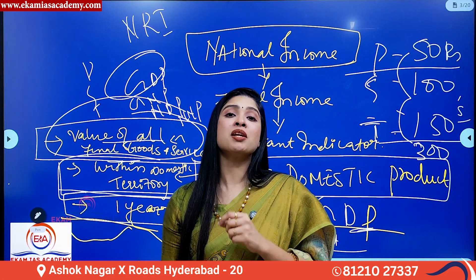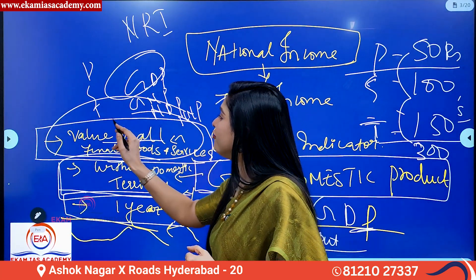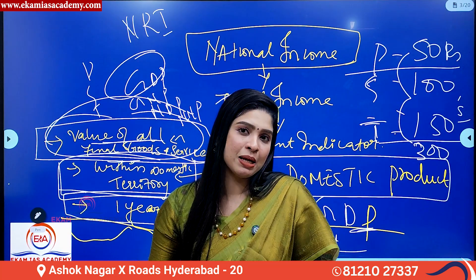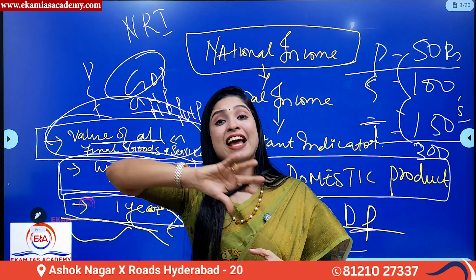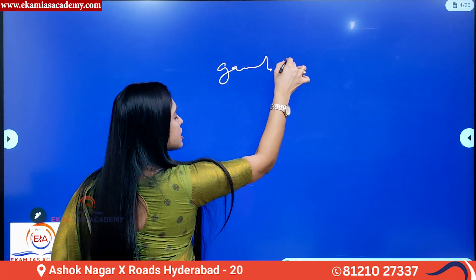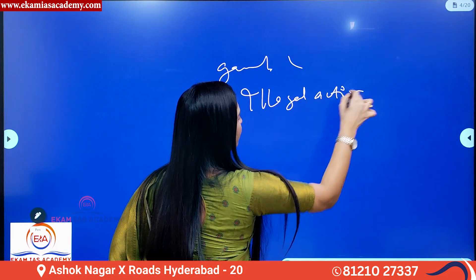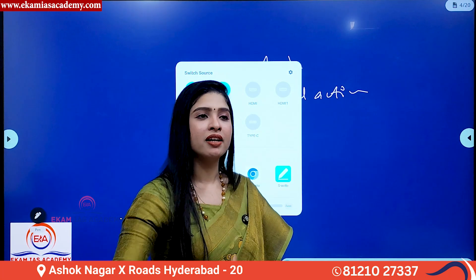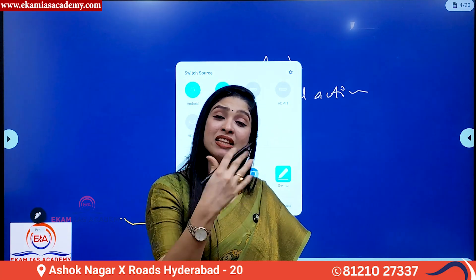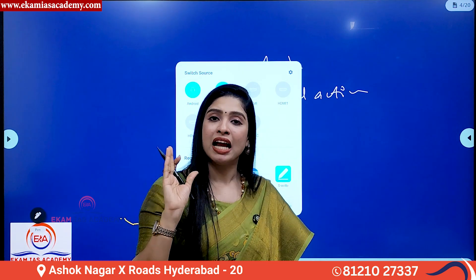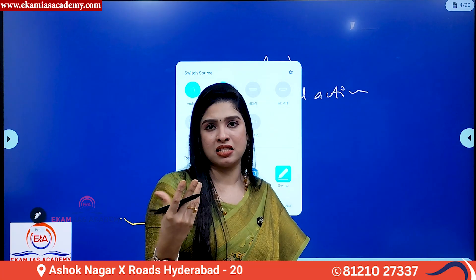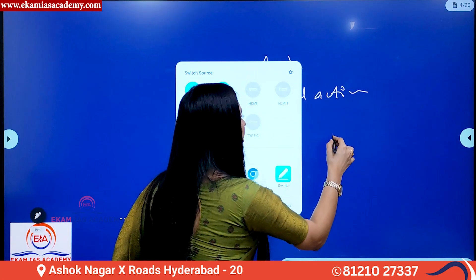Another important point about GDP is the value of all final goods and services, but certain activities are excluded from GDP calculation. Illegal activities such as gambling, smuggling, murder for hire, and sale of illegal drugs are all excluded. These are unaccountable activities that cannot be considered in the calculation of India's GDP.